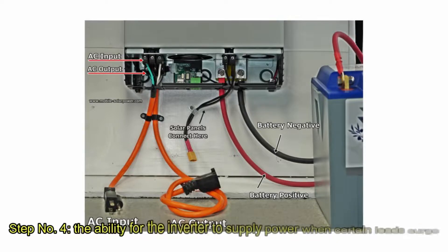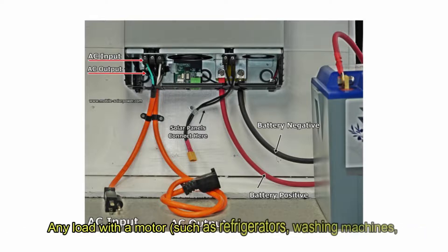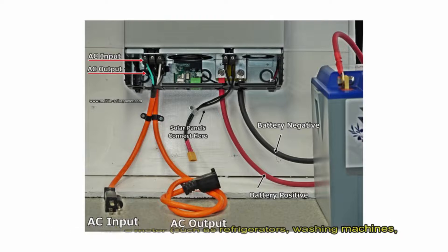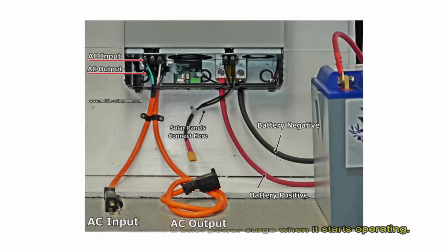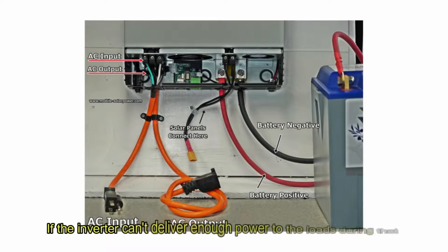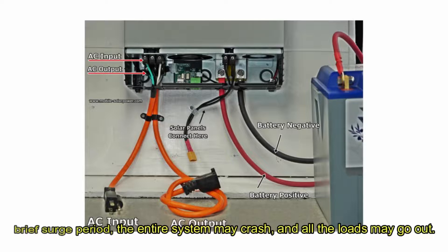Step number four, the ability of the inverter to supply power when certain loads surge. Any load with a motor, such as refrigerators, washing machines, and well pumps, causes a brief power surge when it starts operating. If the inverter can't deliver enough power to the loads during that brief surge period, the entire system may crash, and all the loads may go out.